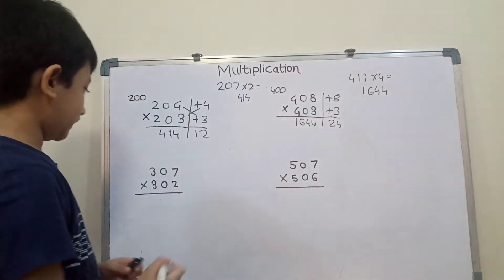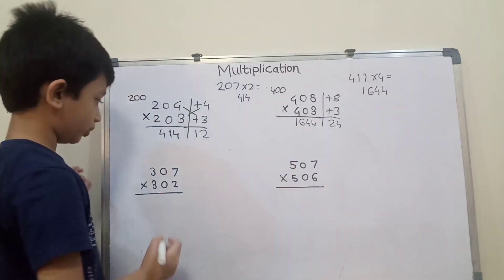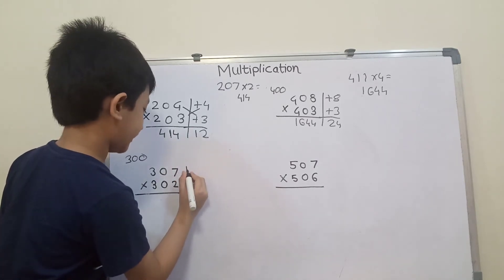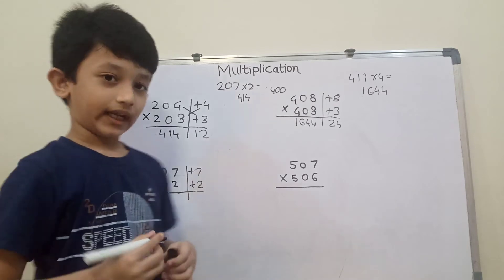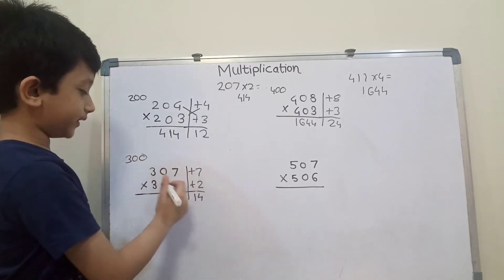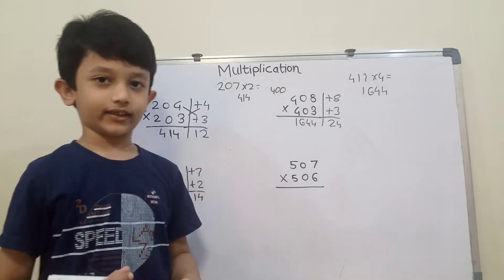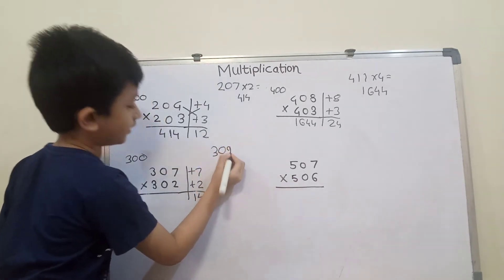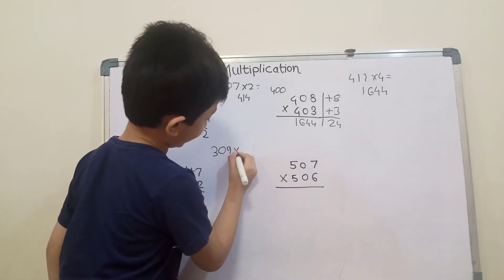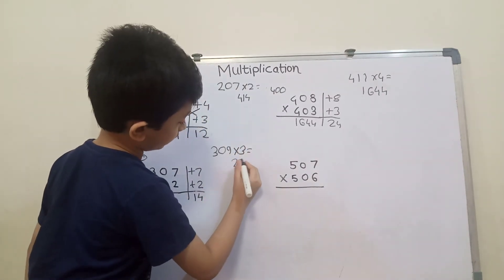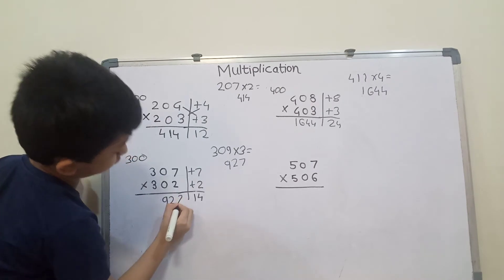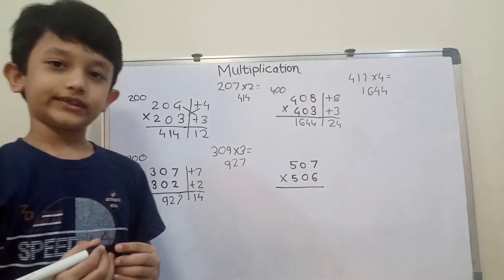Let's start with next problem: 307 into 302. The base is 300. 300 plus 7 and plus 2. 7 times 2 is 14. Then 307 plus 2 or 302 plus 7, answer is 309. The base is 300, so 3 times 3 is 9. So the answer is 92,714.